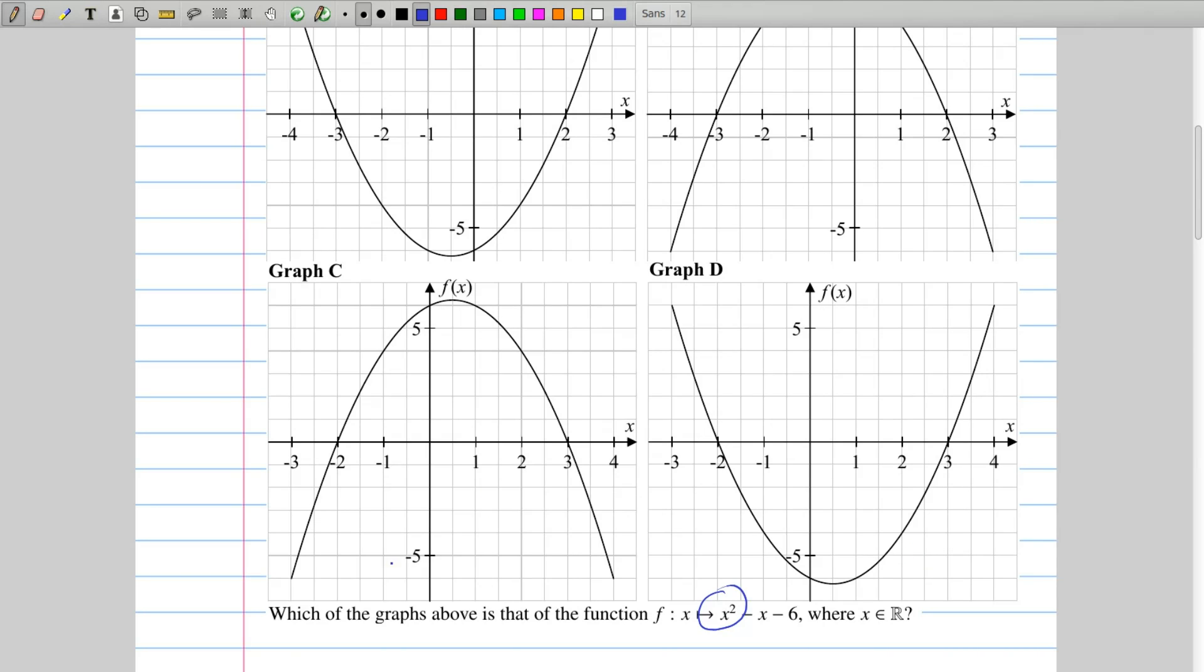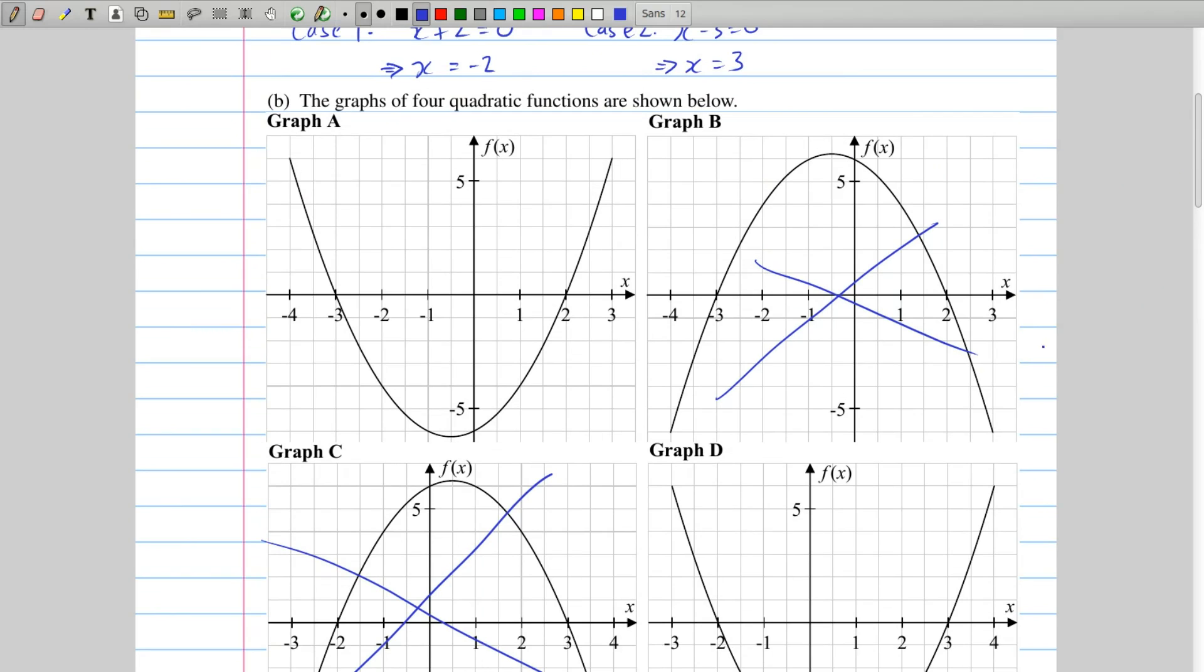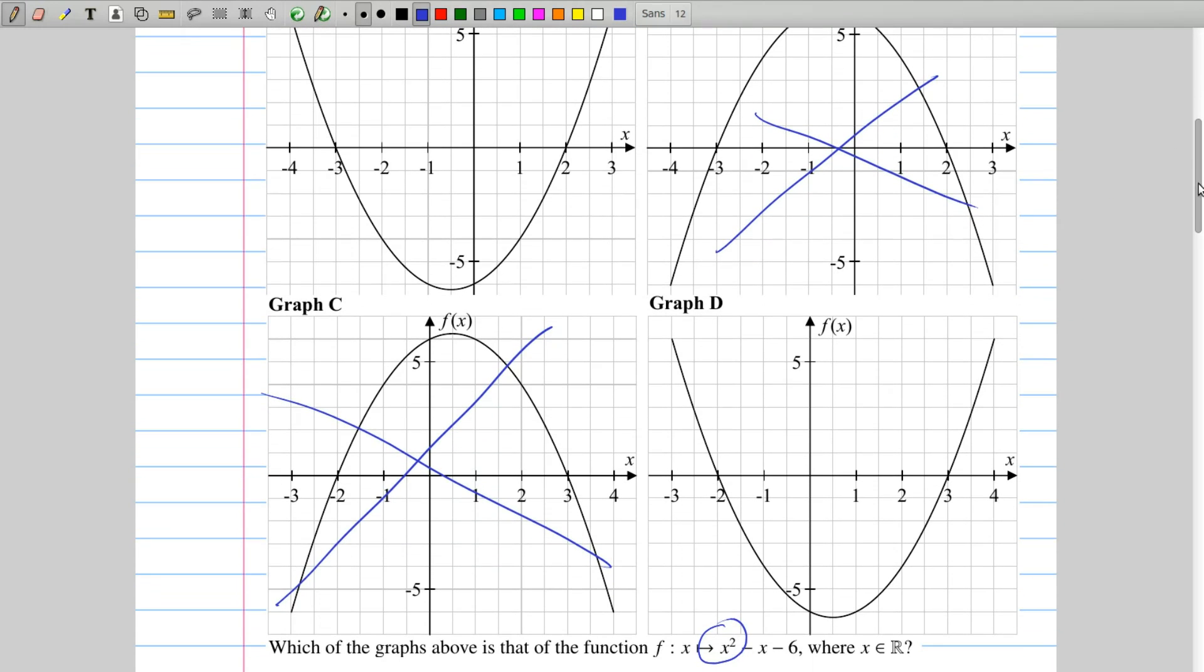So we can immediately rule out c and b, because those are both n-shaped graphs. I can scroll up a little bit so you can see b. You can see that's an n-shaped graph, and so it can't be that because we have a plus x squared. So how do we decide between a and d? Well, the only difference really you can see between them is their location to the left and to the right. You can see that a crosses at minus 3 and plus 2, whereas d crosses at minus 2 and plus 3 on the x-axis.